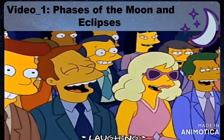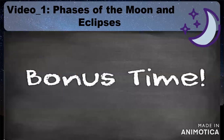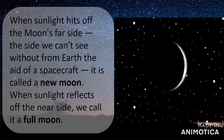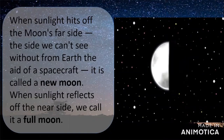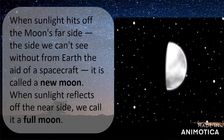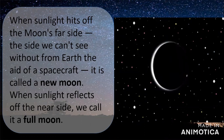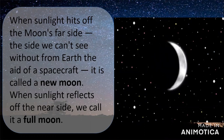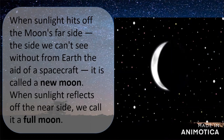Just like the earth, half of the moon is lit by the sun while the other half is in darkness. The phase we see results from the angle the moon makes with the sun as viewed from earth. When sunlight hits the moon's far side — the side we can't see without a spacecraft — it is called a new moon. When sunlight reflects off the near side, we call it a full moon.